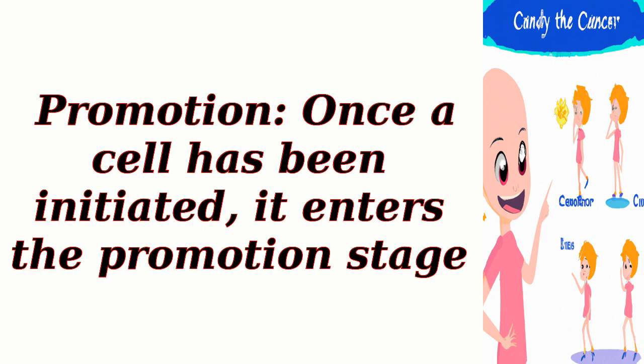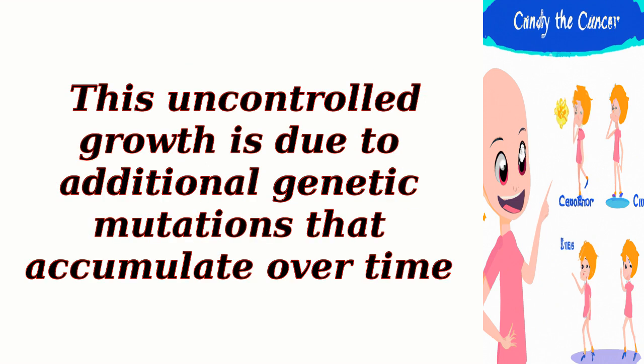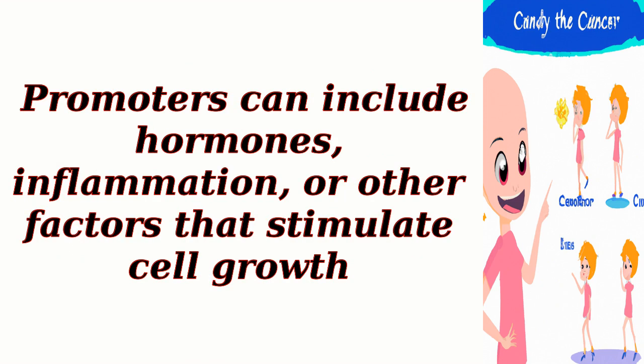The second stage is promotion. Once a cell has been initiated, it enters the promotion stage. During this stage, the initiated cell starts to divide and multiply more rapidly than surrounding normal cells. This uncontrolled growth is due to additional genetic mutations that accumulate over time. Promoters can include hormones, inflammation, or other factors that stimulate cell growth.